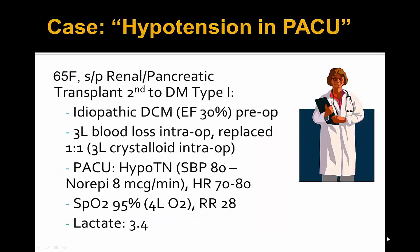We present a case of hypotension in the PACU — the post-anesthesia care unit — of a female status post-renal and pancreatic transplant secondary to type 1 diabetes. The patient had a dilated cardiomyopathy, idiopathic with clean coronaries, with a CHF EF of 30% pre-op. Intraoperatively, she lost about 3 liters of blood estimated by anesthesia and urology, and was replaced 1-to-1 with 3 liters of crystalloid intraop.